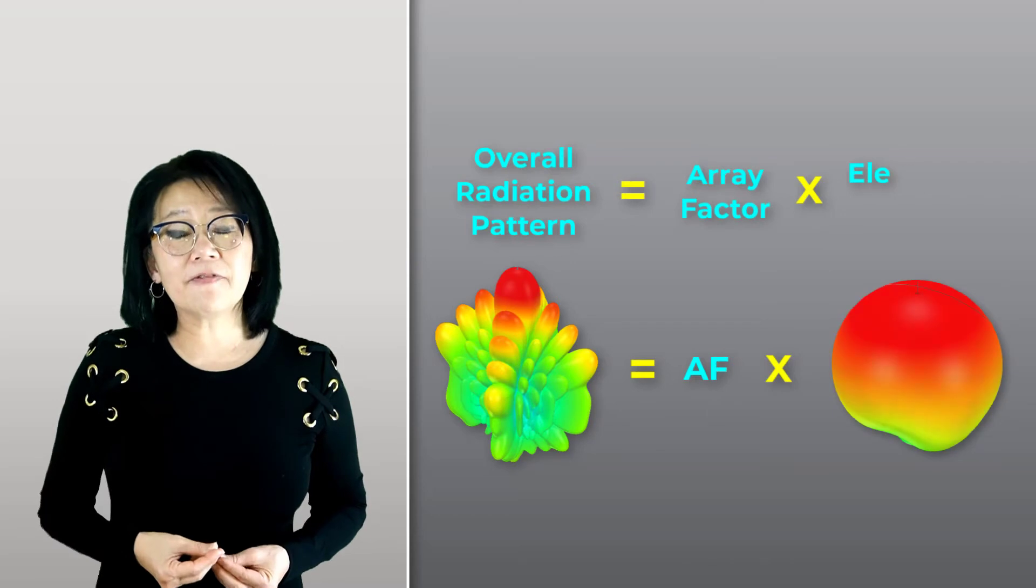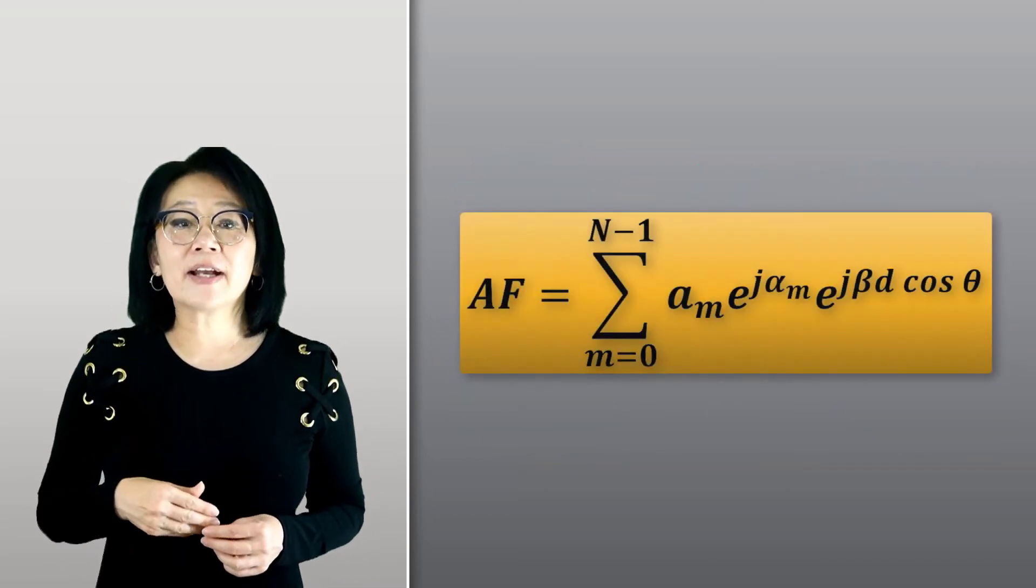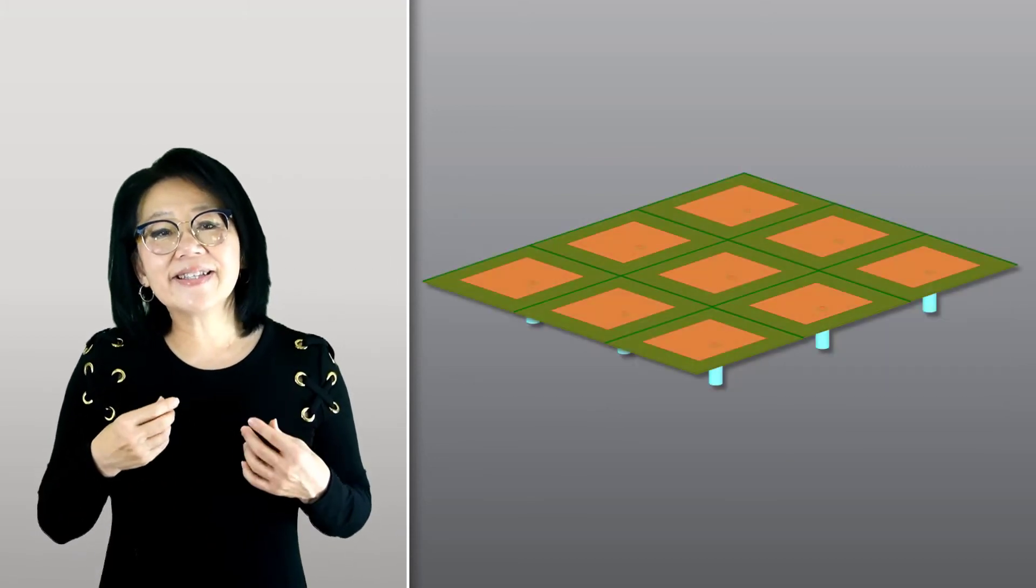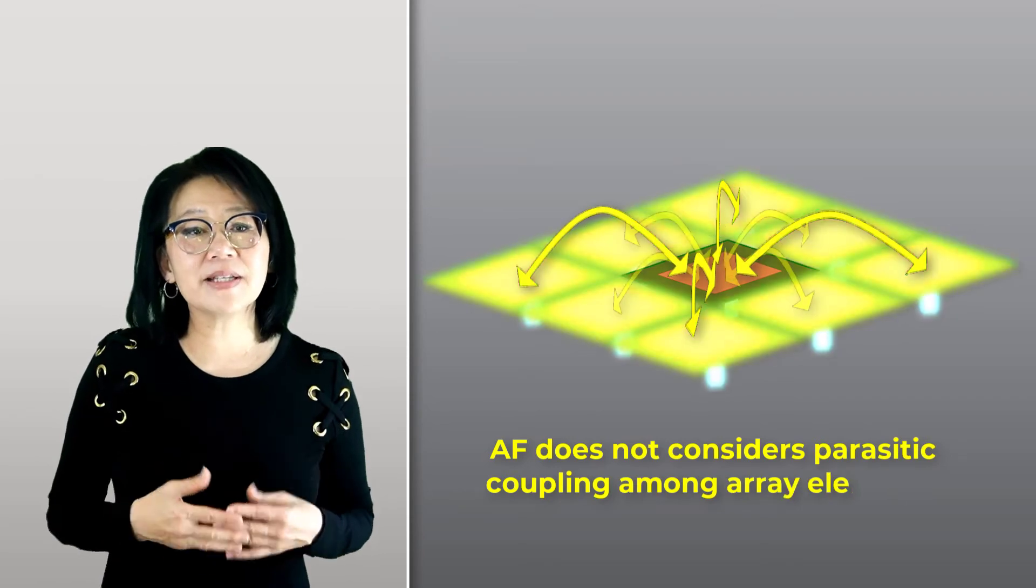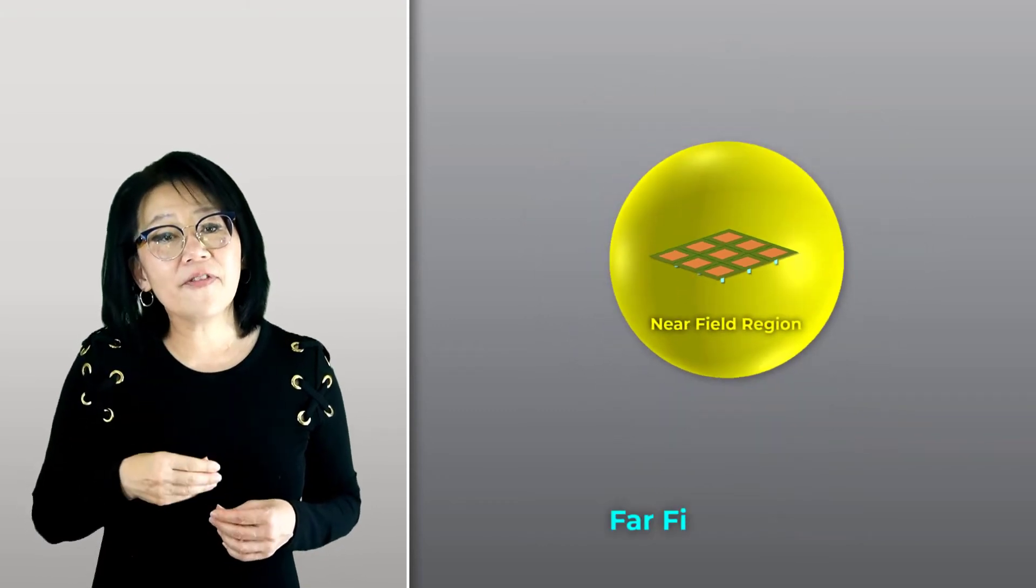The array factor formula looks straightforward, but it does not consider parasitic coupling among the elements. Consideration of the near field is also necessary.